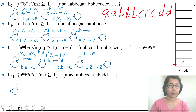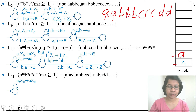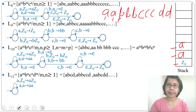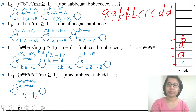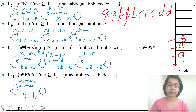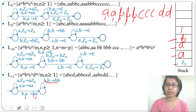Starting from the initial state, for input a with topmost symbol Z0, push a above Z0. For the next a with topmost symbol a, push a above a (self-loop). Then for input b with topmost symbol a, push b above a — create another state. For the next b with topmost symbol b, push b above b (self-loop: (b, b) → bb). We continue pushing b for all three b's.